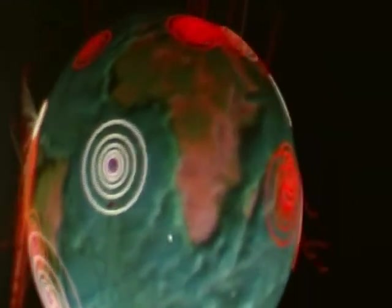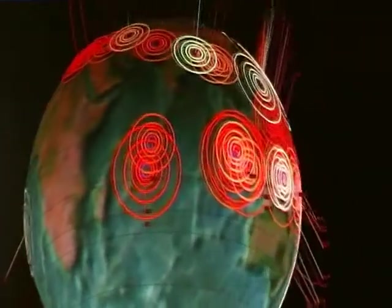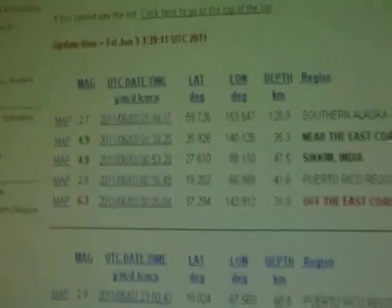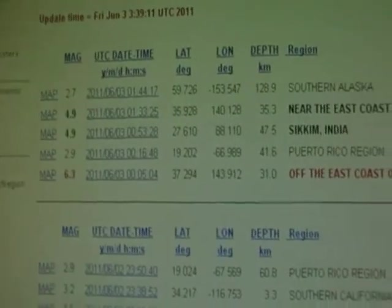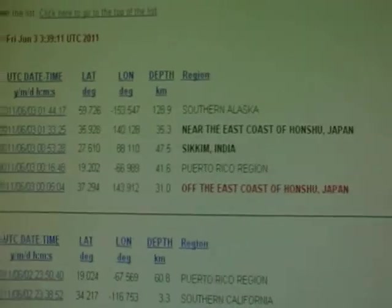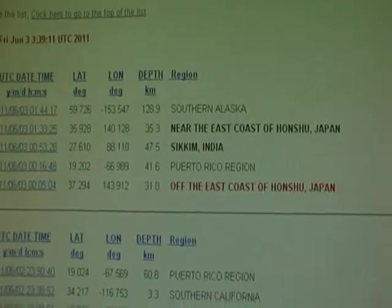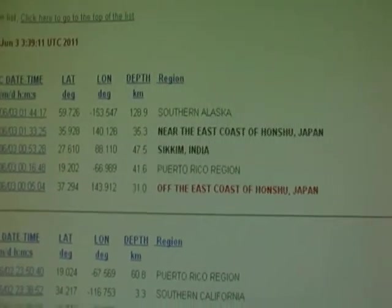Just to confirm this 6.3, we'll go over to the seismic server. Here we are at the USGS and as you can see here, it has been reported as a 6.3 just off the coast of Japan with a depth of 31 kilometers.